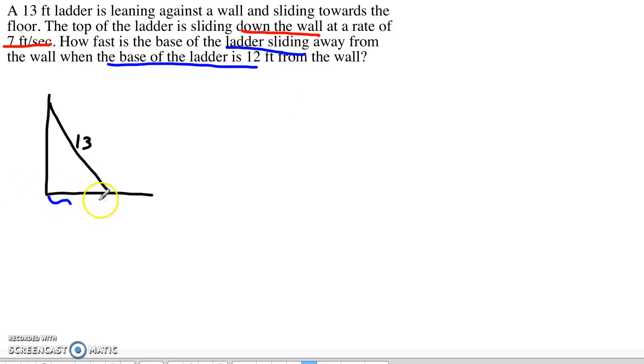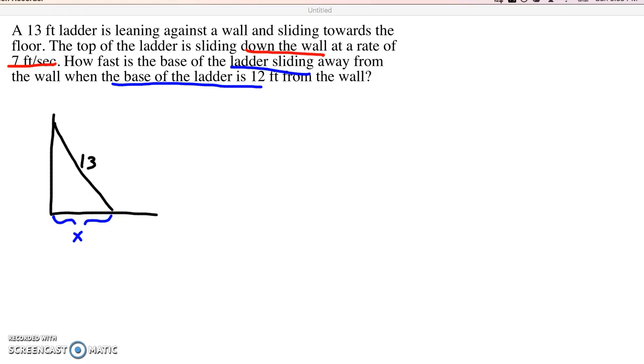So it doesn't really matter what you want to call these. Let's go ahead and call this distance x. That would be the distance the base of the ladder is from the wall. And I'll go ahead and call the other distance here h. That would be the height of the ladder on the wall. So this would be my h here and this would be my x there.